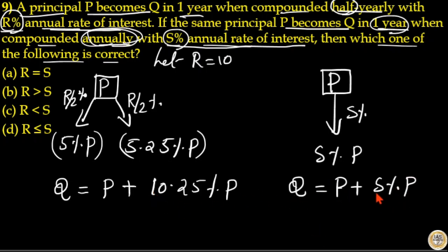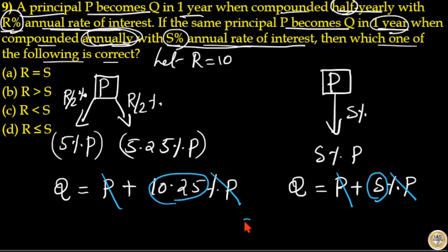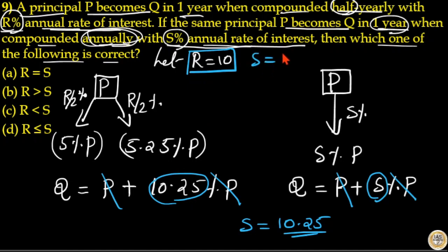Both expressions equal Q, so we can equate them. Cancelling the principal terms, we get S is equal to 10.25. Since R is equal to 10 and S is equal to 10.25, that means S is greater than R, or equivalently R is less than S. This is your answer — option C is correct.